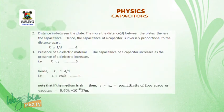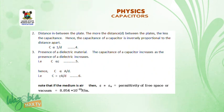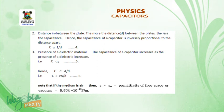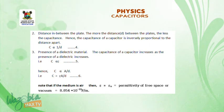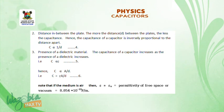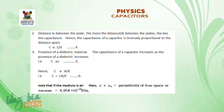2. Distance between the plates. The more the distance D between the plates, the less the capacitance. Hence, the capacitance of a capacitor is inversely proportional to the distance apart — that is, C is inversely proportional to D. 3. Presence of dielectric material. The capacitance of a capacitor increases as the presence of the dielectric increases. That is, C is proportional to A over D.